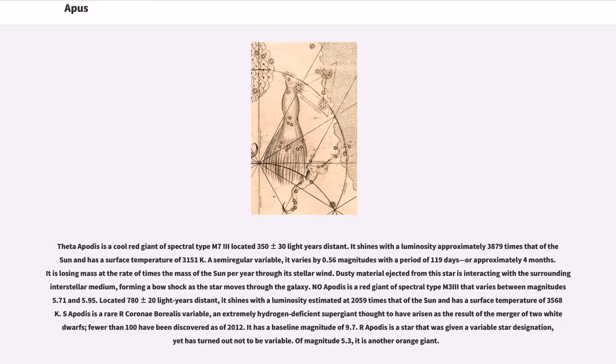Theta Apodis is a cool red giant of spectral type M7 III located 350 plus or minus 30 light-years distant. It shines with a luminosity approximately 3879 times that of the Sun and has a surface temperature of 3151 K. A semi-regular variable, it varies by 0.56 magnitudes with a period of 119 days, or approximately 4 months. It is losing mass at the rate of times the mass of the Sun per year through its stellar wind. Dusty material ejected from this star is interacting with the surrounding interstellar medium, forming a bow-shock as the star moves through the galaxy.